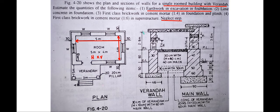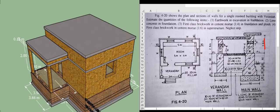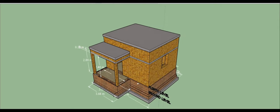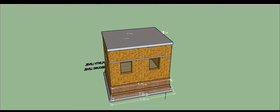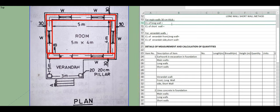Looking at the cross-section of the veranda versus the main wall section. We start by finding the center line of the long wall and the center line of the short wall. The center line of the long wall equals 5 plus 0.3 divided by 2, multiplied by 2.